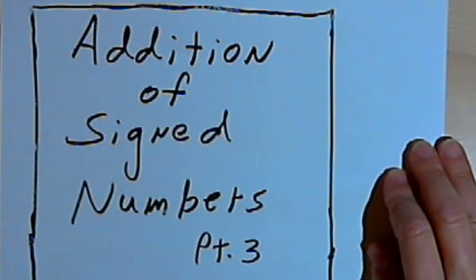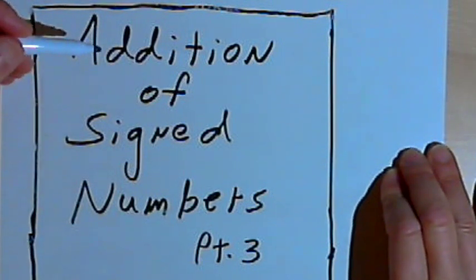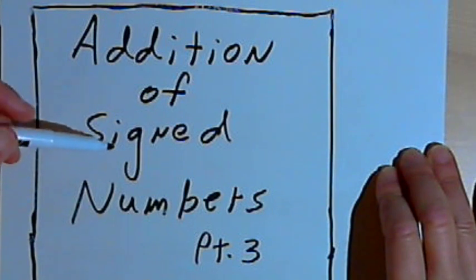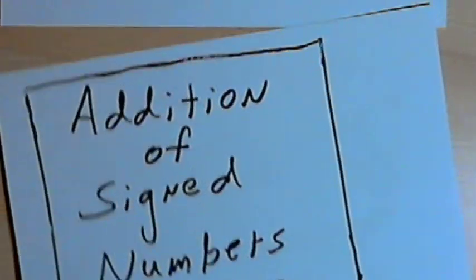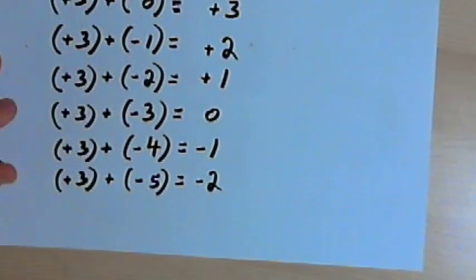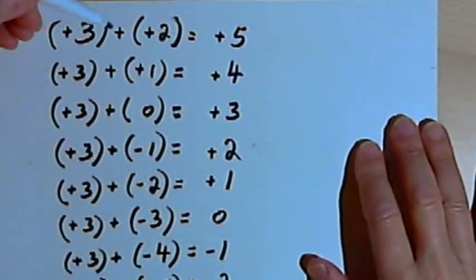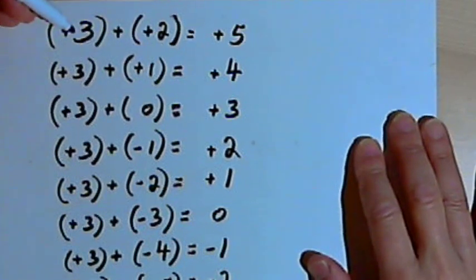This video is provided as supplementary material for courses taught at Howard Community College. This is going to be the third and last video about the addition of signed, or positive and negative, numbers. In this video I just want to look at some patterns that we get when we add numbers. Sometimes patterns help us understand how a process works.